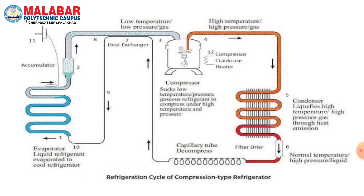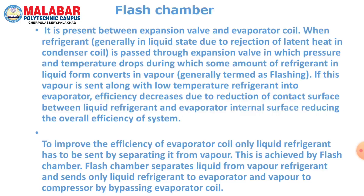When refrigerant passes through the expansion valve, pressure and temperature drop, during which some amount of liquid refrigerant converts to vapor. If this vapor is sent along with low-temperature refrigerant into the evaporator, efficiency decreases due to reduction of contact surface between liquid refrigerant and the evaporator's internal surface, reducing the overall efficiency of the system. To improve the efficiency of the evaporator coil, only liquid refrigerant should be sent by separating it from vapor.